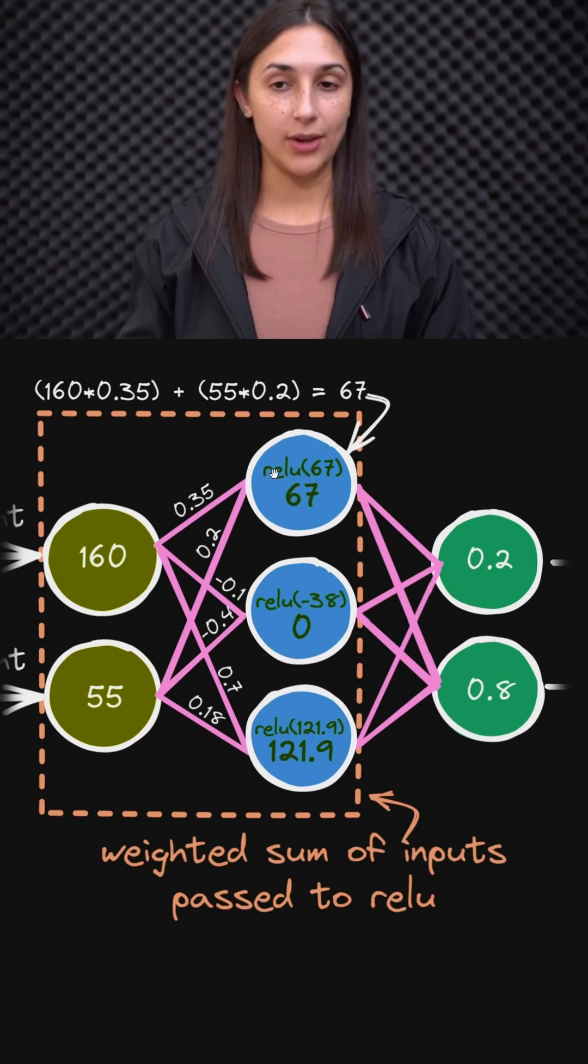Now when we pass 67 to ReLU, ReLU outputs the max of zero and 67. In this case, the max is 67, and that is the final value of this node after being passed to the activation function ReLU.